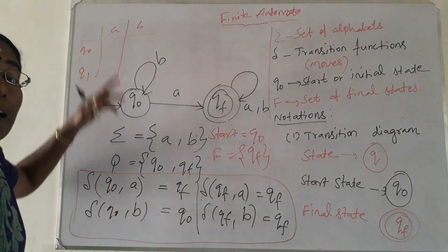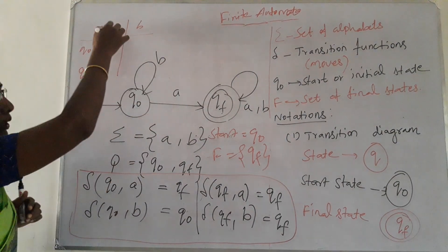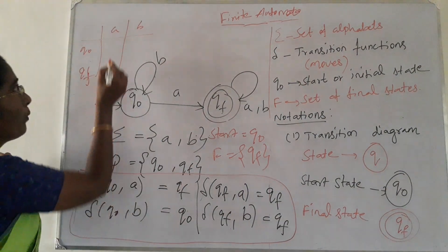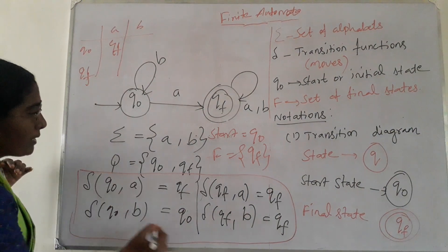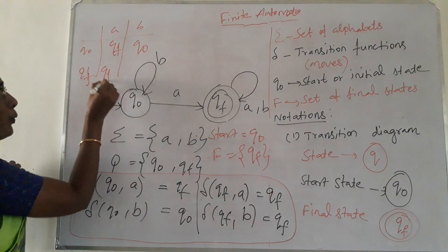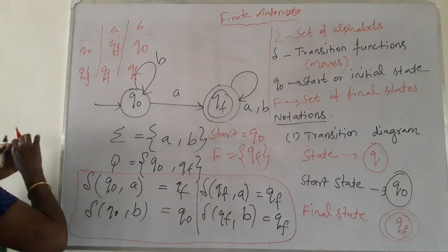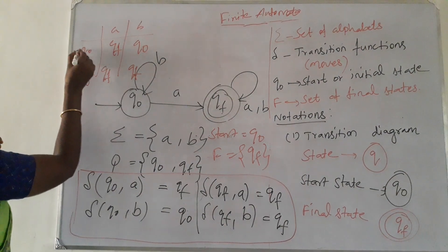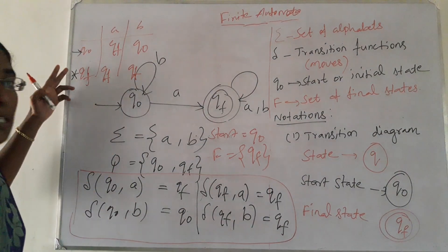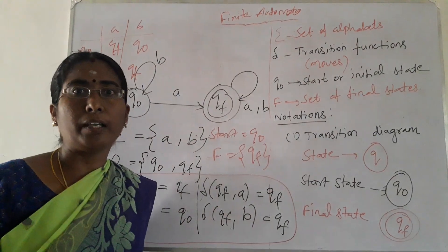The related transition table has two states Q0 and QF as rows, and input symbols A and B as columns. Q0 on A gives QF, Q0 on B gives Q0, QF on A gives QF, and QF on B gives QF. The start state is marked with an arrow and the final state with a star. This is all about the definition and notations of the DFA. Thank you.